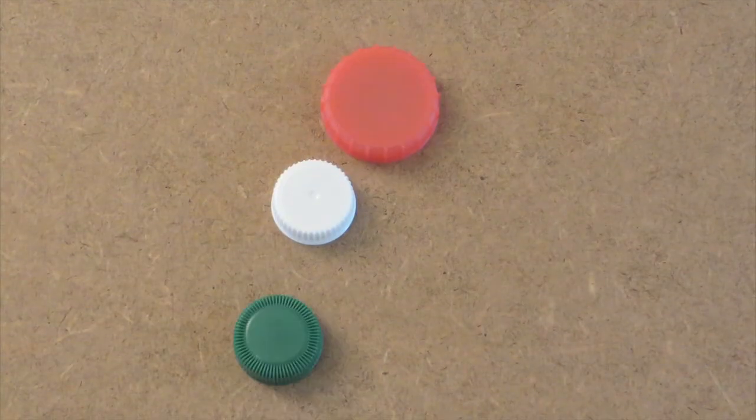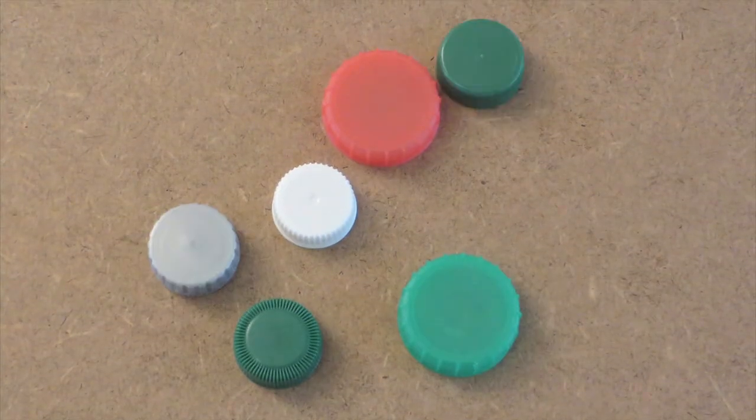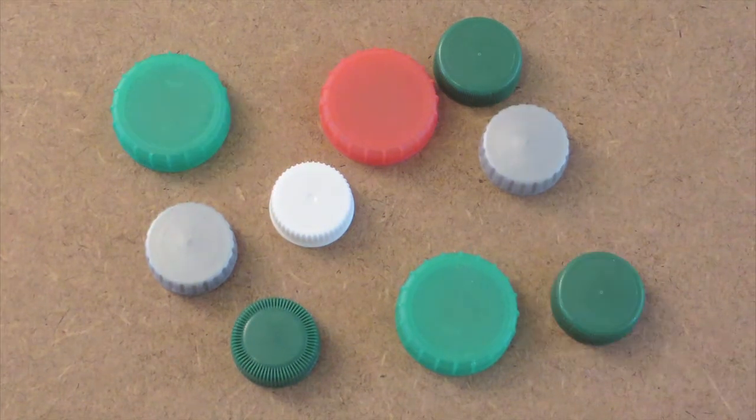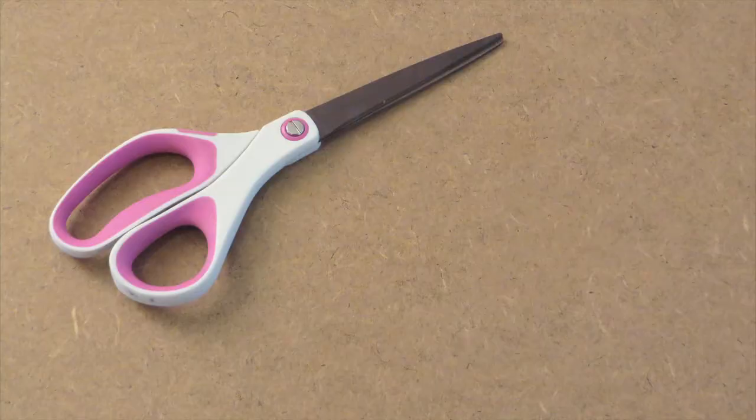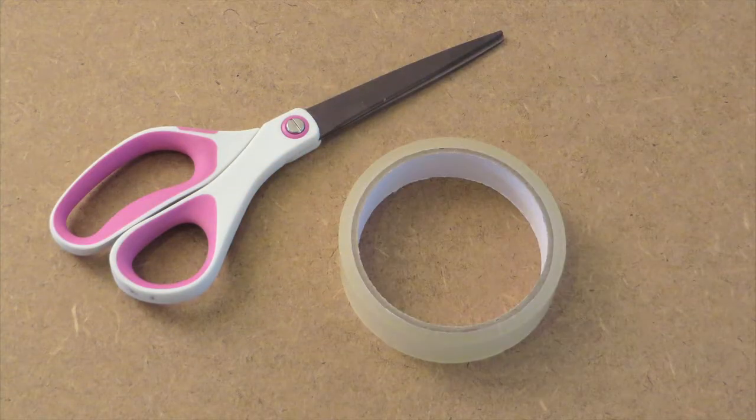Some plastic bottle tops such as milk tops or pot bottle tops, some elastic bands and a pair of scissors, a roll of sticky tape and a pen.